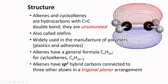Alkenes have sp2 hybrid carbons connected to three other atoms in a trigonal planar arrangement. As illustrated in this model, the alkene can be considered to have two phases — one at the top and the other at the bottom. This red and blue colored mesh are representations of the pi orbitals. They are perpendicular to the sigma bonds that connect the two carbon atoms.